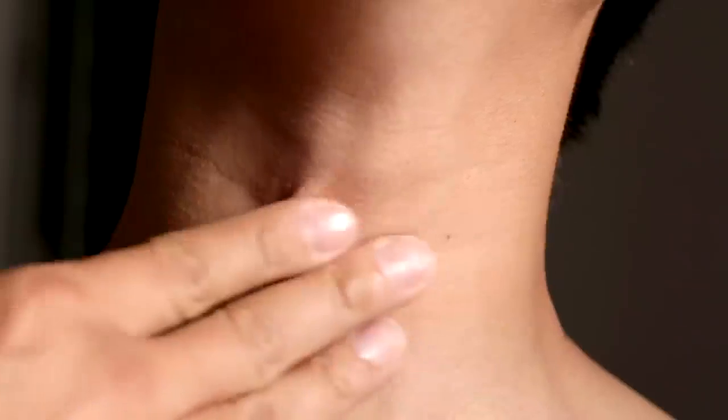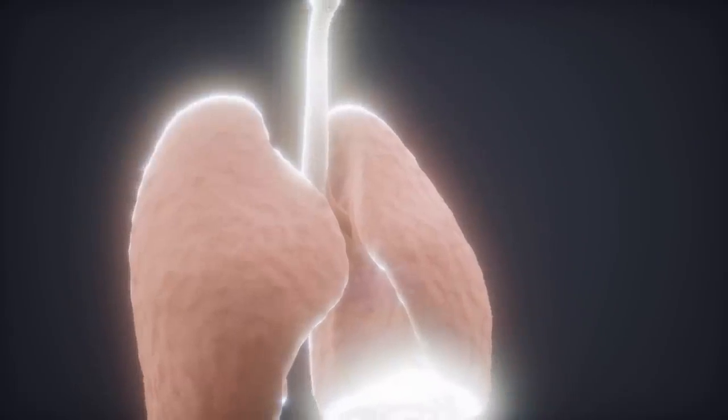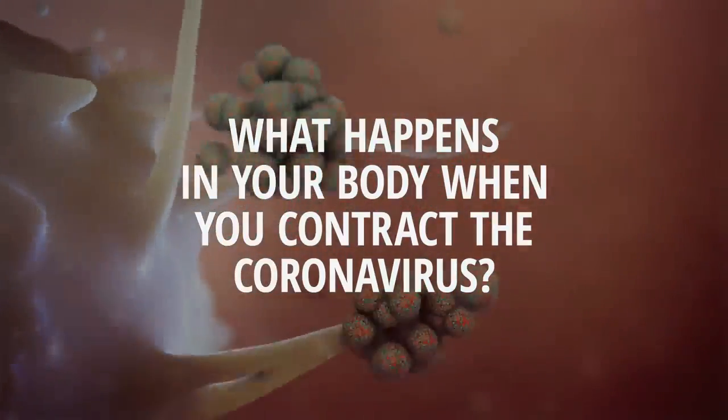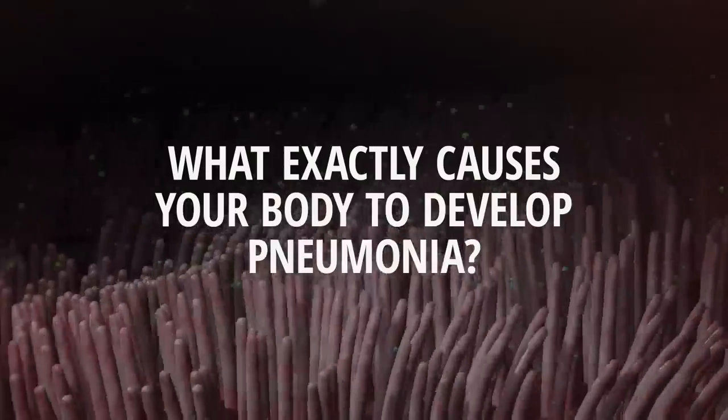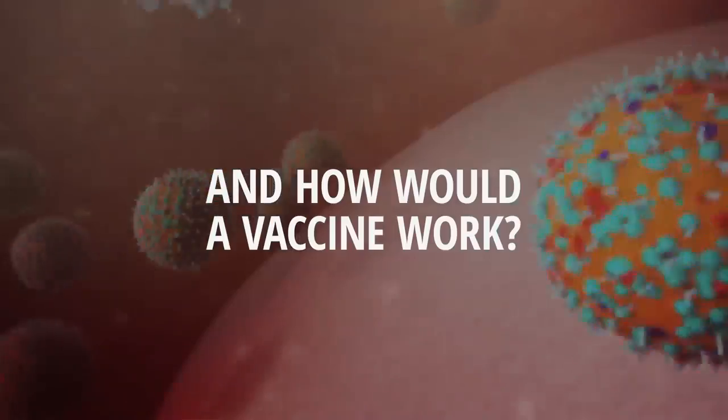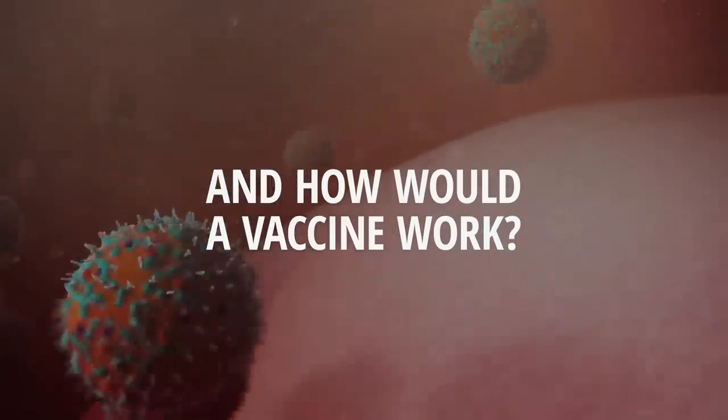SARS-CoV-2 can cause COVID-19, a contagious viral infection that attacks primarily your throat and lungs. What actually happens in your body when you contract the coronavirus? What exactly causes your body to develop pneumonia? And how would a vaccine work?